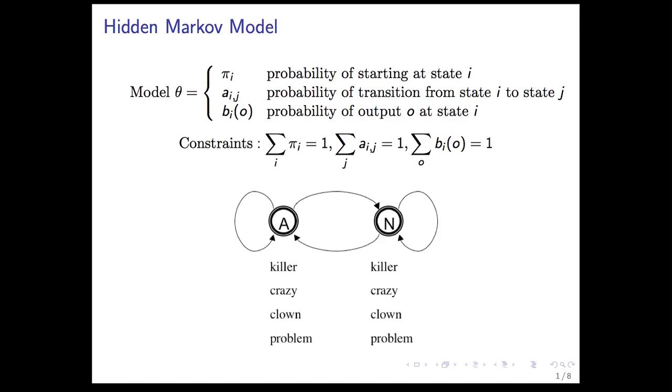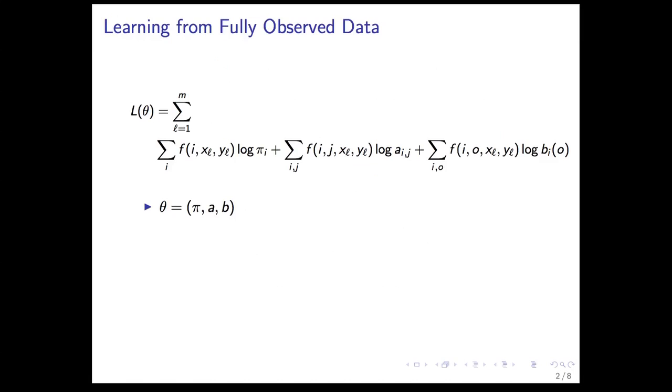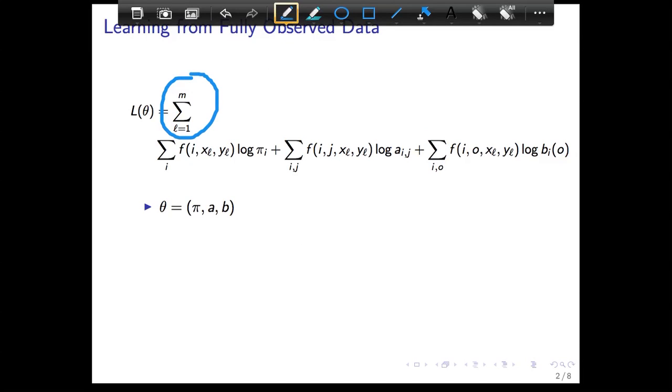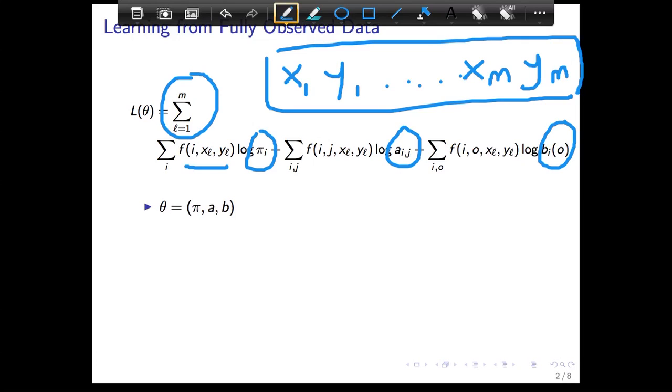We're going to use the running example, the same toy HMM that we've been using. The log likelihood of the data for some labeled data X1, Y1 all the way to XM, YM, and for each of the start states, transitions, and emissions that we see in all of this labeled data, we can describe that in terms of the parameters pi, A, and B. The frequency of the number of times we saw something times the log of the probability will give us the total log probability for this particular data set, and we're trying to maximize the likelihood of this data set.